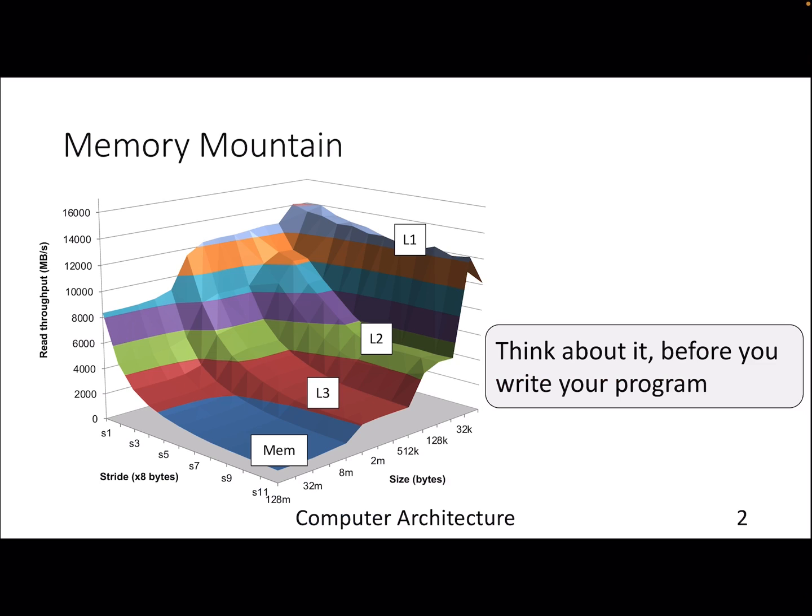In this slide I'm showing a plot which is also known as the memory mountain. On one axis I'm showing the cache size in bytes, so you can read it as 32 kilobytes to 128 megabytes. Another axis shows the throughput, which eventually affects our execution time. Higher the better.